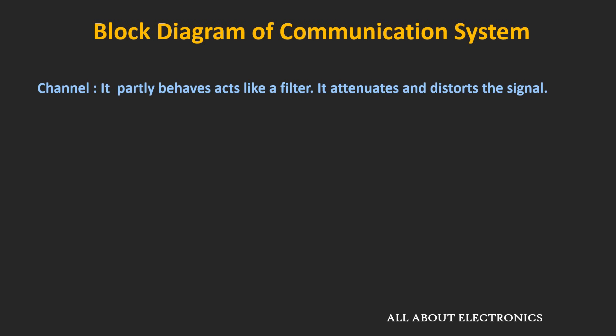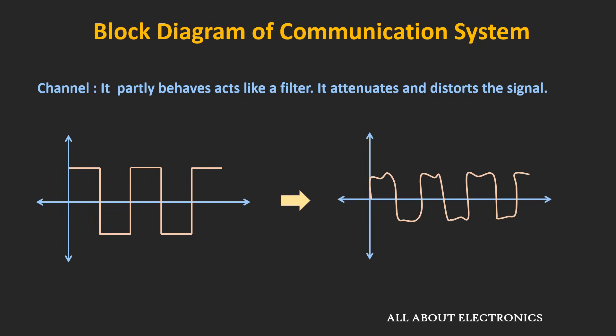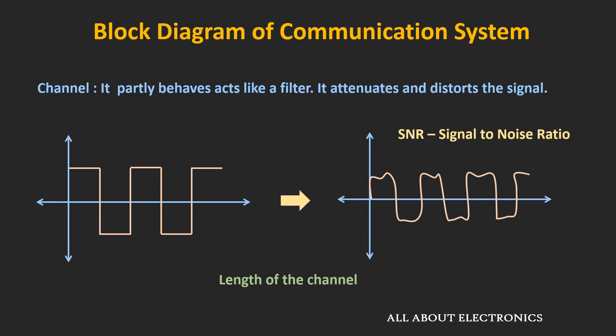Once the transmitted signal passes through the channel and is received at the receiver, it gets attenuated as well as distorted. Moreover, noise also gets superimposed over the transmitted signal. The amount of attenuation and distortion depends on the length of the channel — the longer the signal travels, the more attenuation and distortion occur. Whether the detector can recover the signal depends on the signal-to-noise ratio (SNR), which is the ratio of signal power to noise power. By increasing signal power, the SNR can be improved and the signal can be transmitted over a longer distance faithfully.